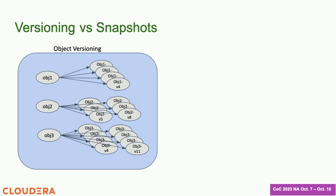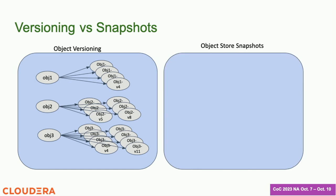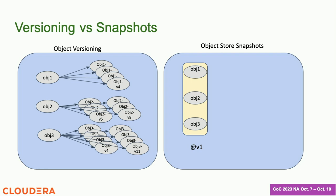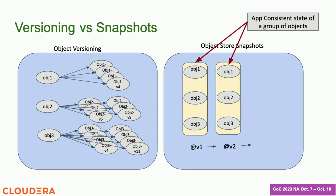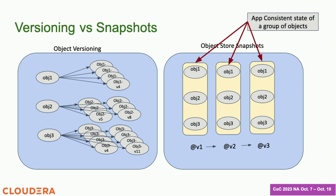Somebody has to worry about cleaning up all these different versions of the object lying out there. As opposed to that, if you look at a snapshot feature, we are not looking at individual objects — we are looking at a group of objects that are managed by one application as a cohesive unit. This group of objects, as an atomic unit, all move together from one version to another version. That's the key difference.